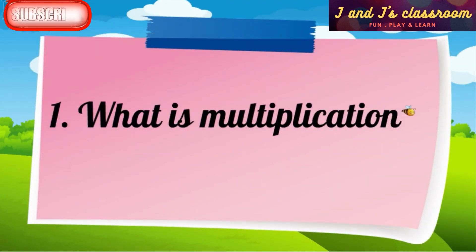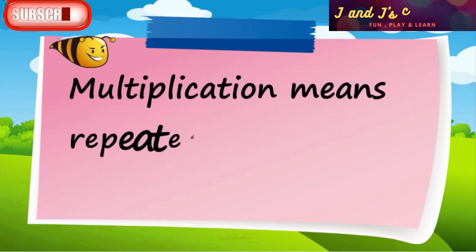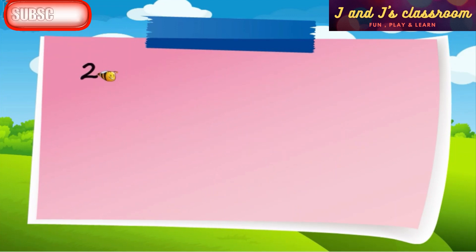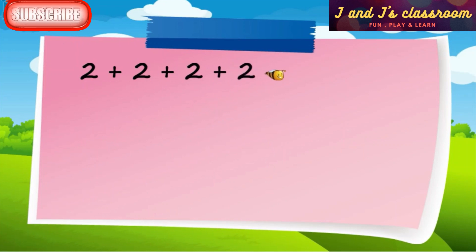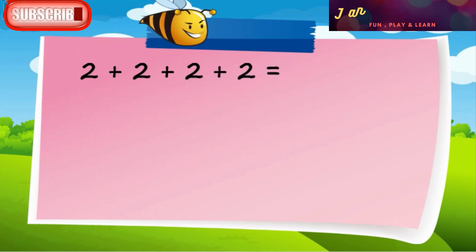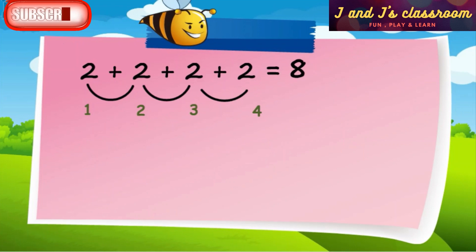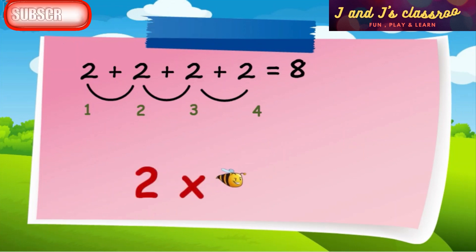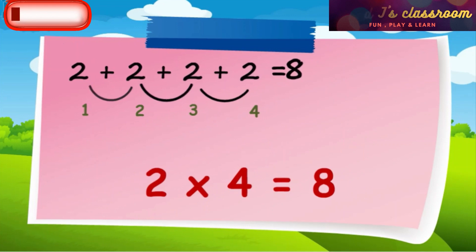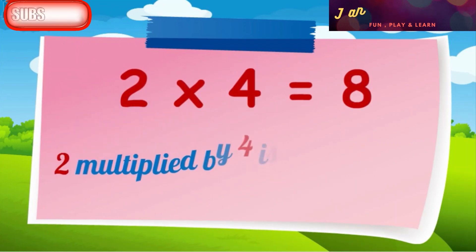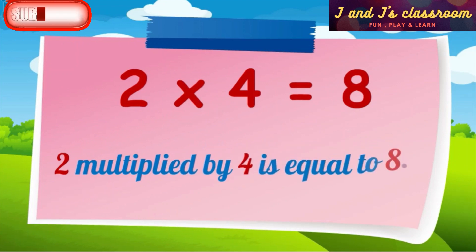What is multiplication? Multiplication means repeated addition of the same number. For example, 2 plus 2 plus 2 plus 2 is equal to 8. Here, 2 was repeatedly added 4 times. So we can write 2 cross 4 is equal to 8, or we can say that 2 multiplied by 4 is equal to 8.